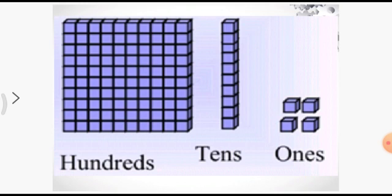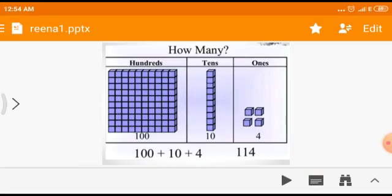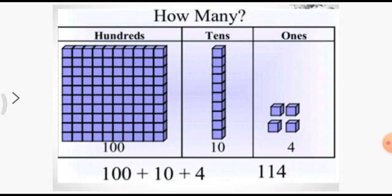Now look at the picture of hundreds, tens and ones. We will learn how to write numbers and their number names. I have a few examples here — just see them carefully. One block of hundred is given, one block of ten is given and four blocks of ones are given. So hundred plus ten plus four makes 1, 1, 4, and it is read as one hundred fourteen.